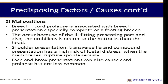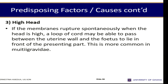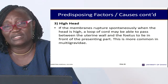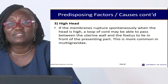Face and brow presentation can also cause prolapse because these parts cannot be well applied to the cervix — only the vertex position allows full apposition. In conditions of a high head, if the membranes rupture spontaneously when the head is high and not descended, the loop of cord may pass between the uterine wall and the fetus and lie in front of the presenting part. This is very common in multigravida women.